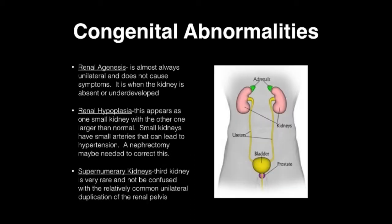The next item is congenital abnormalities seen in the general urinary tract. Renal agenesis is almost always unilateral and does not cause symptoms — it is when the kidneys are either absent or underdeveloped. Renal hypoplasia occurs when there is one smaller kidney and the other is larger than normal; small kidneys have small arteries that can lead to hypertension, and a nephrectomy may be needed, making this a cause of secondary hypertension. Supernumerary kidneys refer to a third kidney, which is very rare, and must not be confused with the relatively more common unilateral duplication of the renal pelvis.